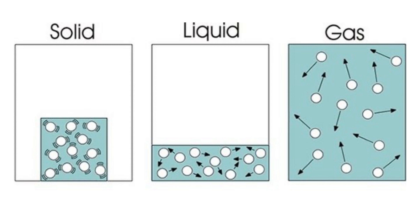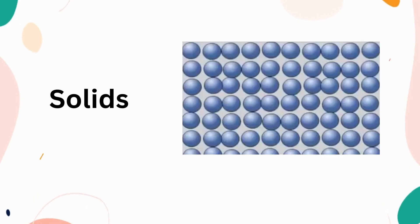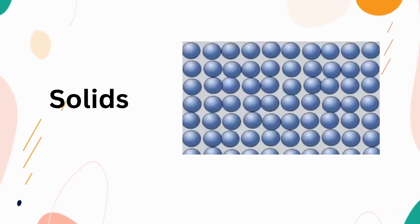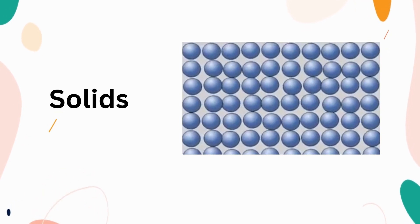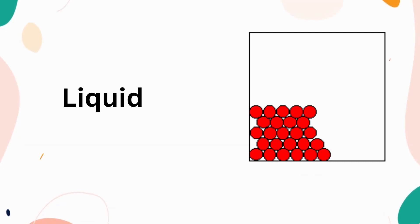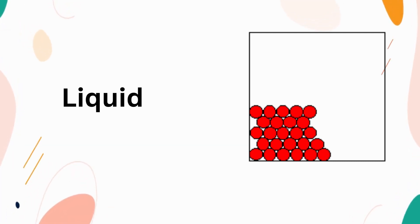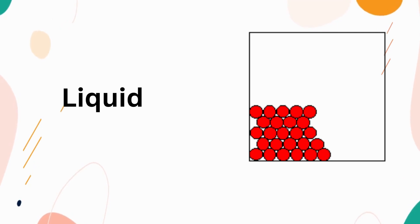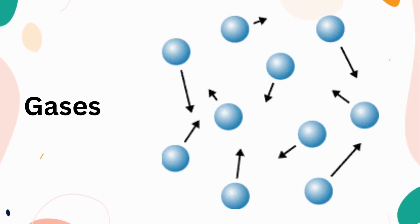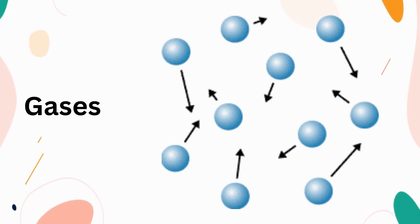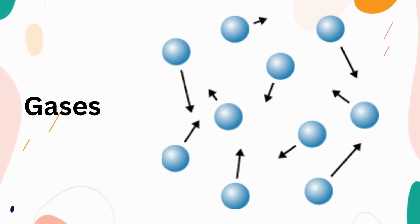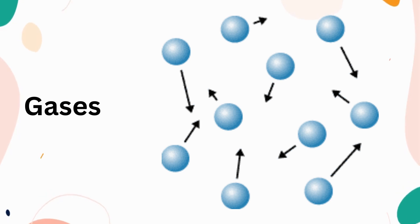The kinetic theory explains how particles move in solids, liquids, and gases. In a solid, each particle is held closely together and movement is minimal. In liquids, particles can roll over each other and have more freedom to move. In gases, particles move very quickly and are free to move in any direction — gases have the most heat energy of the three states.